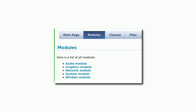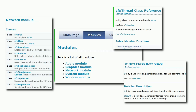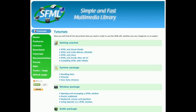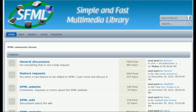SFML has five core modules: audio, graphics, network, system, and window — basically the same core basics that you would find from any game programming library. The shiny features are the network module, which allows you to do TCP and UDP networking applications, and the system module has support for threading and Unicode. SFML has a pretty good tutorial on its own website for the basics. I don't know what the community is like, but they do have an official forum you can go to.